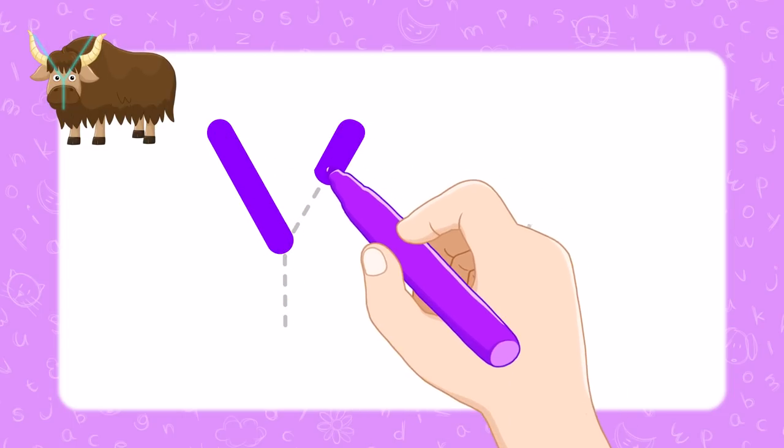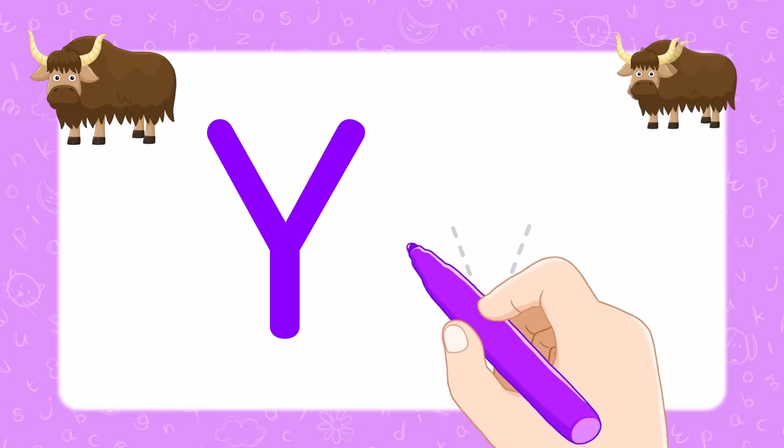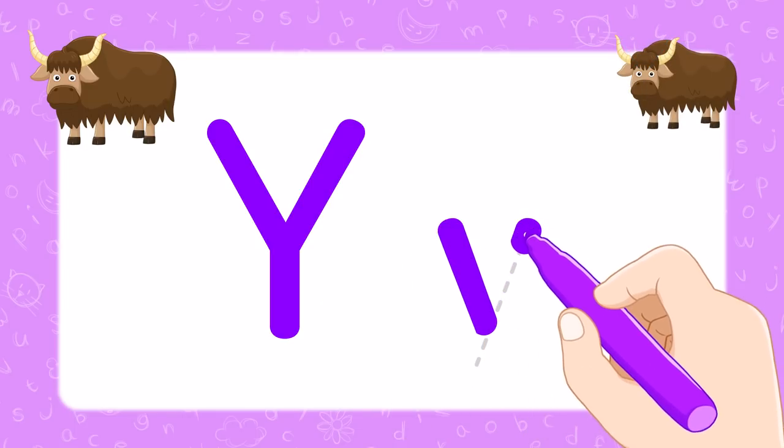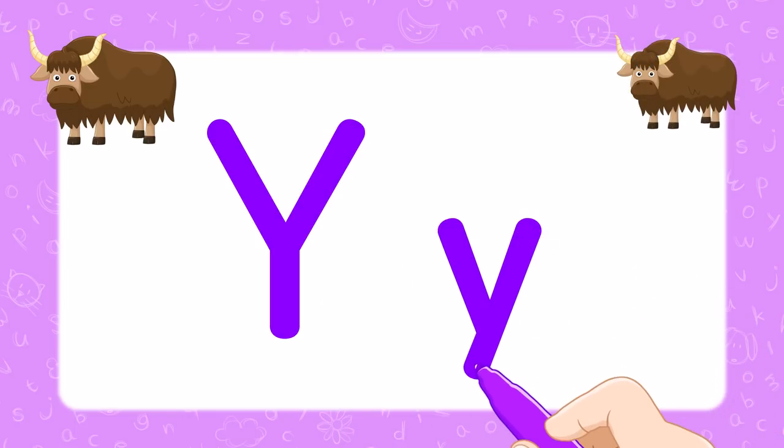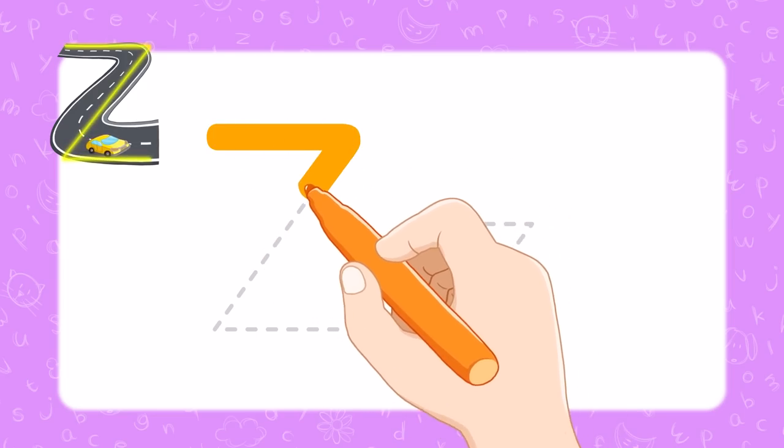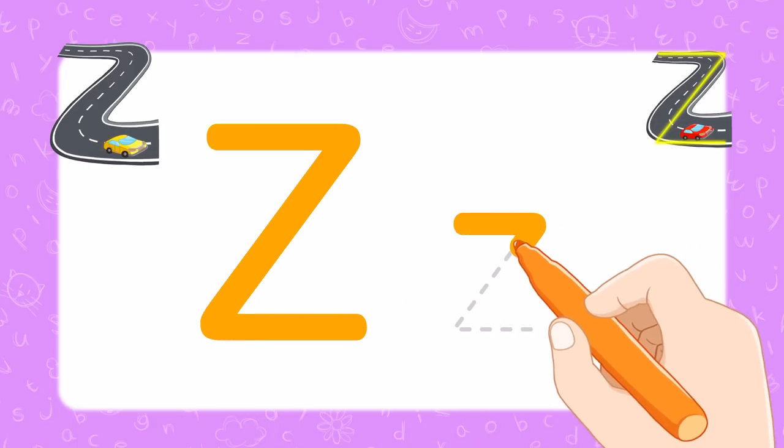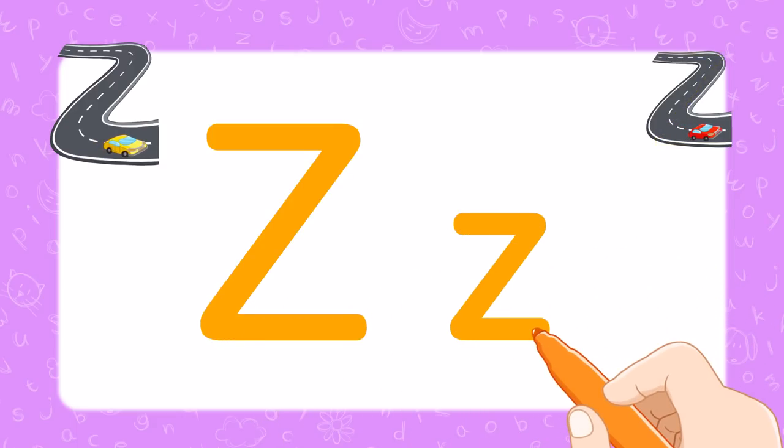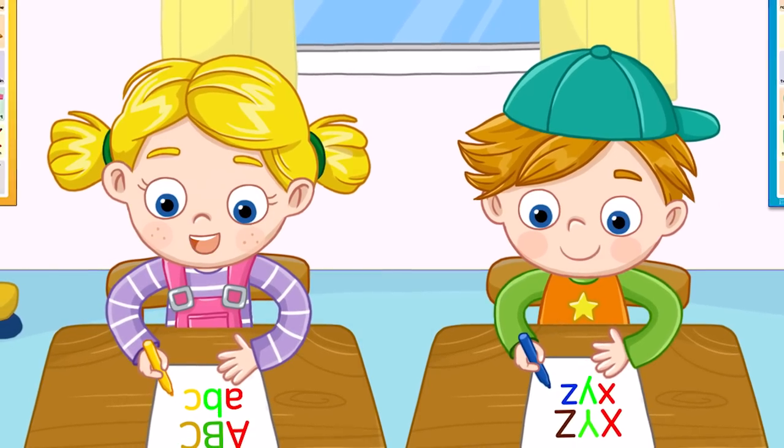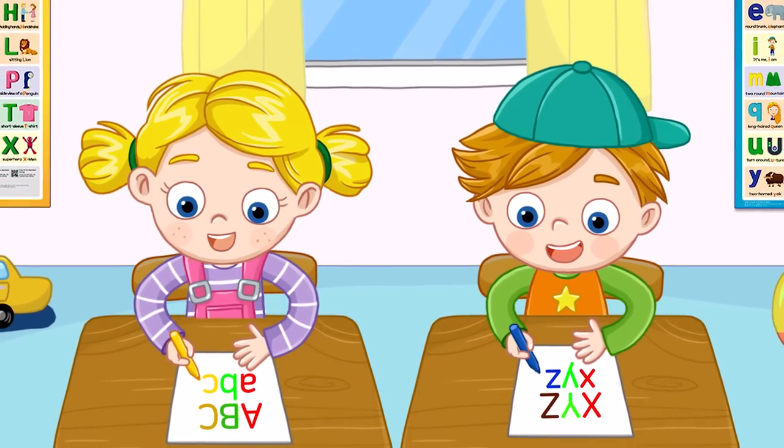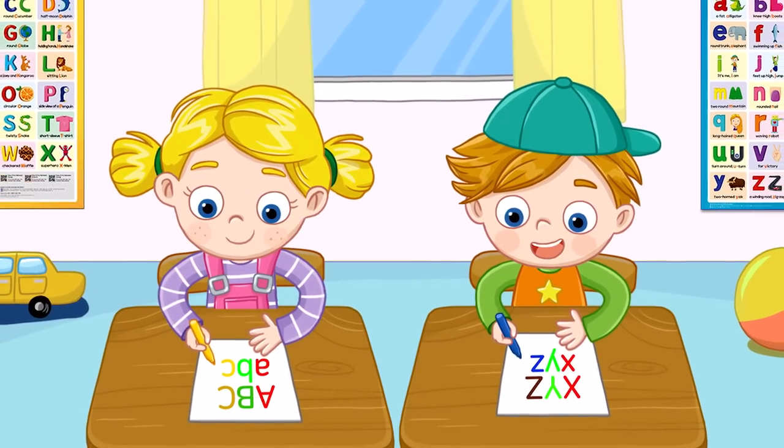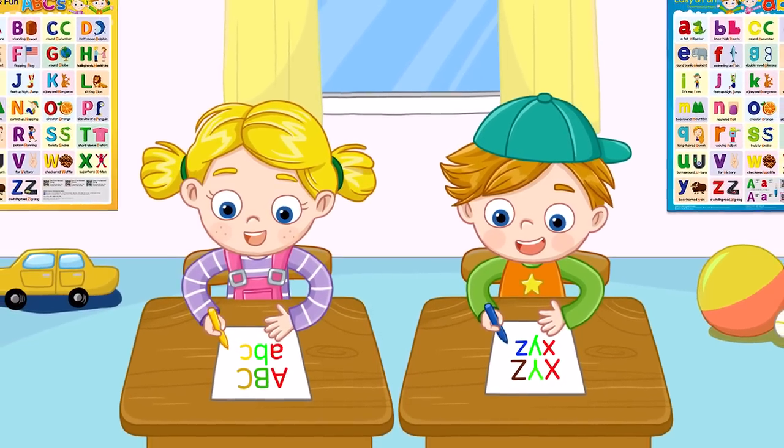Y, Two Horned Yak Y. Z, A Winding Road Zig Zag Zee Z. Now we know our ABC's.